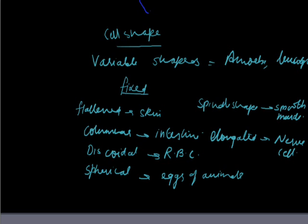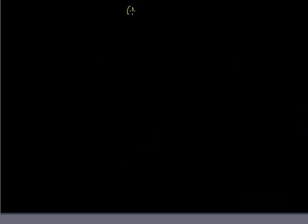Now we will come to the cell size. Regarding the cell size, the cell size varies from few micrometer to few centimeters. It can be very much small like 0.2 to 2.5 micrometer in case of bacteria and it can be too large as in case of ostrich.